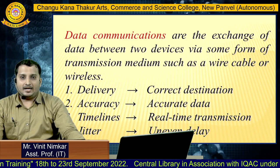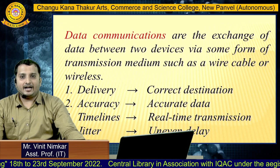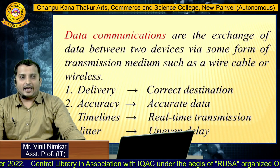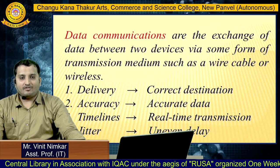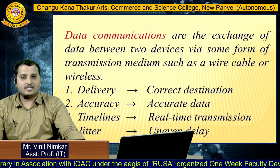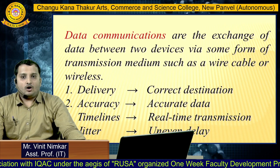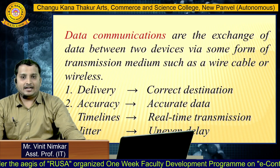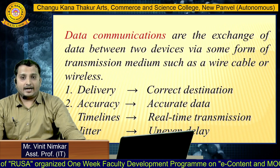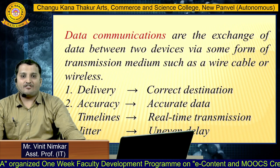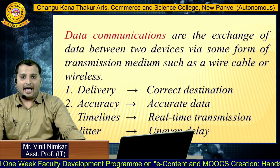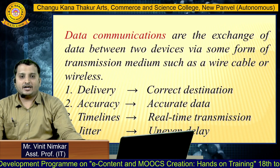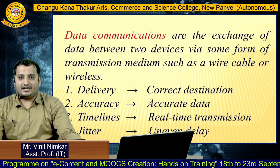Since in networks we are going to send data from sender to receiver, data communication is important. Data communication is the exchange of data between two devices via some form of a transmission medium such as wire, cable, or wireless. It should have important characteristics like delivery — it should reach the correct destination — accuracy, timeliness, meaning data should be transmitted in real time, and jitter, meaning there should not be any uneven delay.